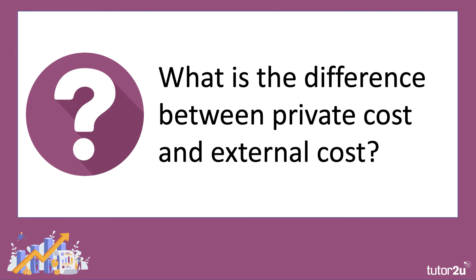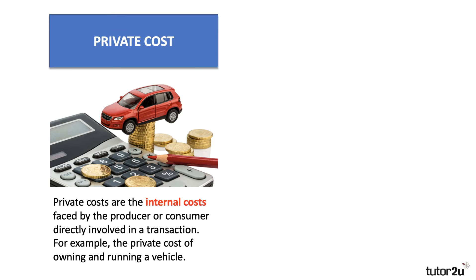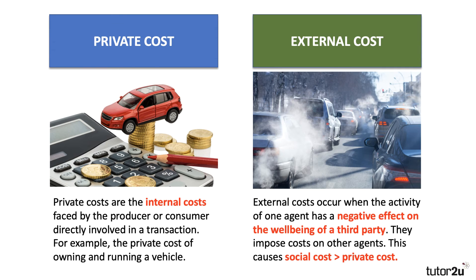A key concept is the difference between private cost and external cost. Private cost is the cost paid by the producer or the consumer — also called internal costs. For example, owning and running a car involves insurance, petrol, and depreciation — all internal costs. The external cost, by contrast, is the externality: when your production or consumption imposes an extra cost on the well-being of a third party — a bystander.